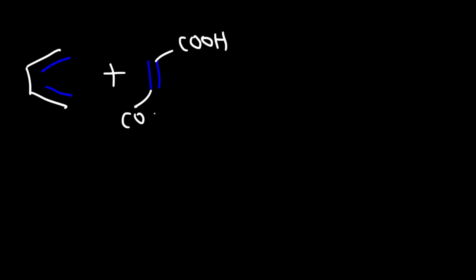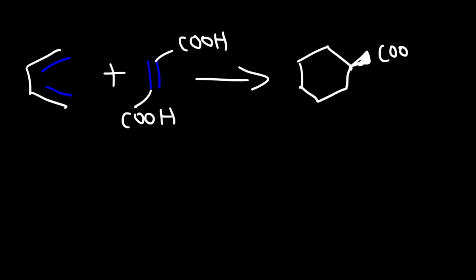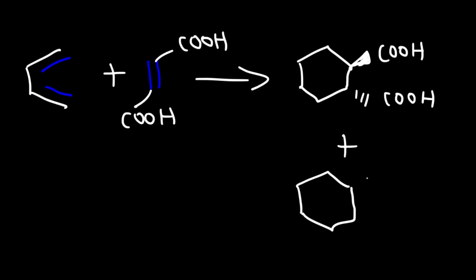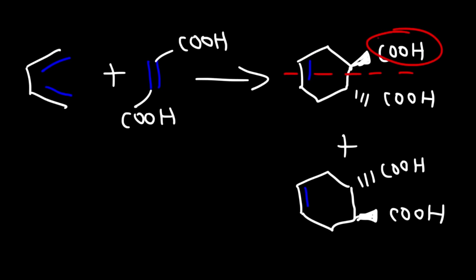Now let's use a trans alkene as our dienophile and predict the major product. The two carboxylic acid groups have to be on opposite sides with respect to each other, so we get that compound plus its enantiomer. In this case we get a mixture of two different products, both of which are trans. We no longer have an internal plane of symmetry because one group is on a wedge and the other is on a dash.